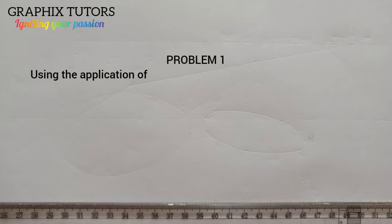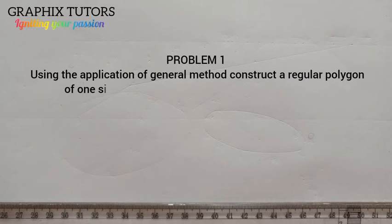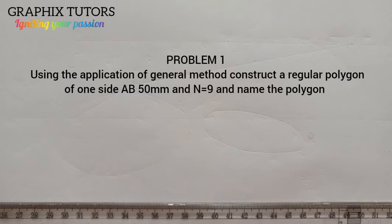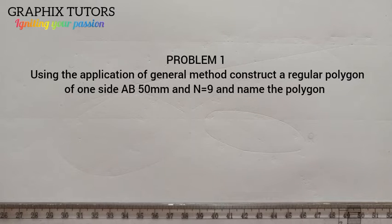Hello everyone, my name is Graphics. Today we want to construct a regular polygon. The question says: using the application of the general method, construct a regular polygon with one side AB equal to 50 millimeters and n equals nine. We also need to name the polygon.